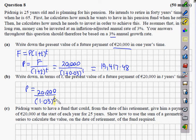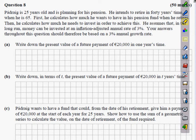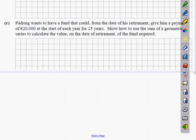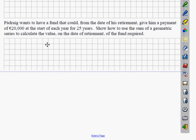Now, what we have next, guys, is Padraig wants to have a fund that could, from the day of retirement, give him a payment of €20,000 at the start of each year for 25 years. Show how to use the sum of a geometric series to calculate the value on the date of retirement. A good way, again, points on the board would be to look up exactly what is the sum of a geometric series. So, sum of a geometric series, we can get points on the board straight away by using the Sn formula.